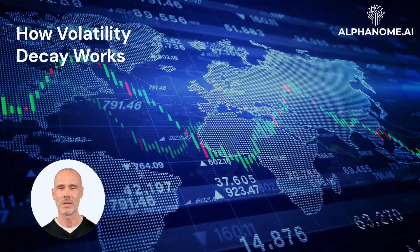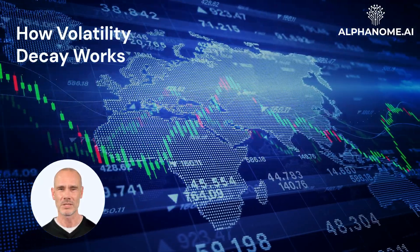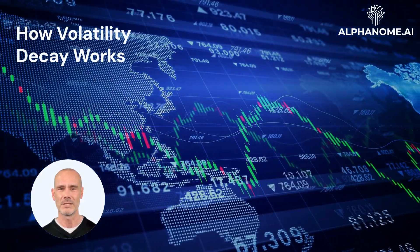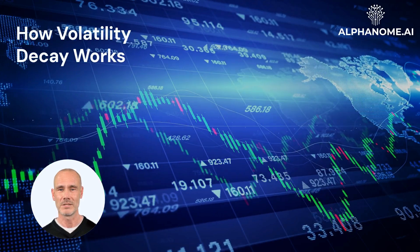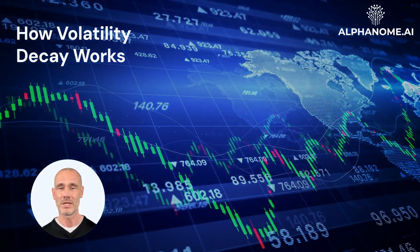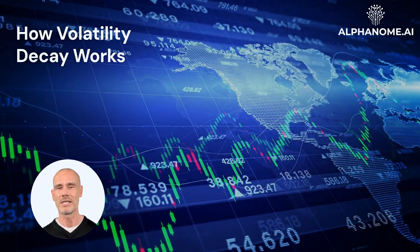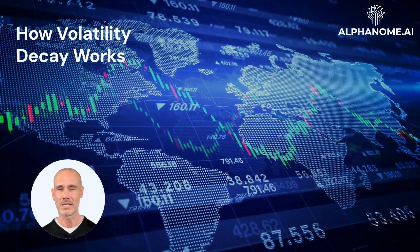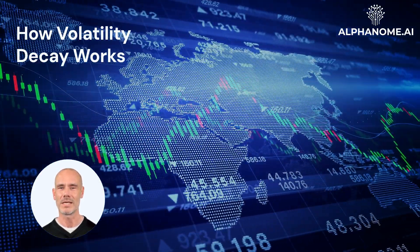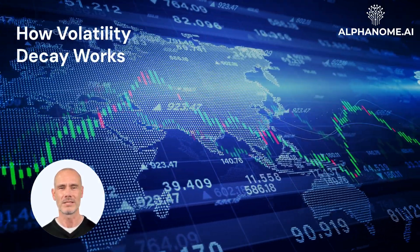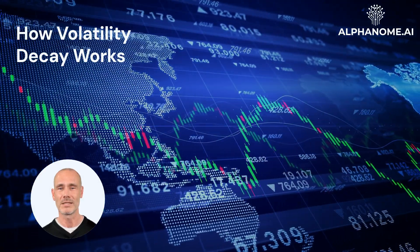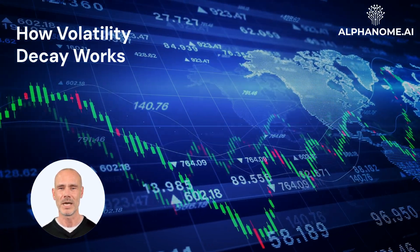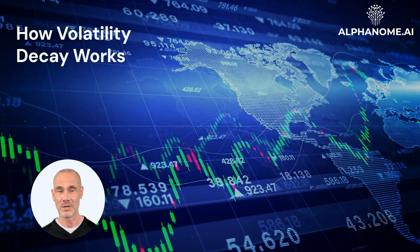How volatility decay works. To understand volatility decay, it's essential to grasp how leveraged ETFs operate. These funds use financial derivatives and debt to amplify the daily returns of an underlying index. For example, a 2x leveraged S&P 500 ETF aims to deliver twice the daily return of the S&P 500 index. The key word here is daily. Leveraged ETFs reset their exposure each day to maintain their stated leverage ratio. This daily rebalancing is the primary cause of volatility decay.